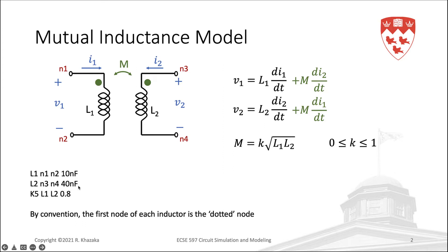The mutual inductance is defined separately using the K element, which specifies the coupling coefficient K. In this particular example, K is set at 0.8 in the netlist.